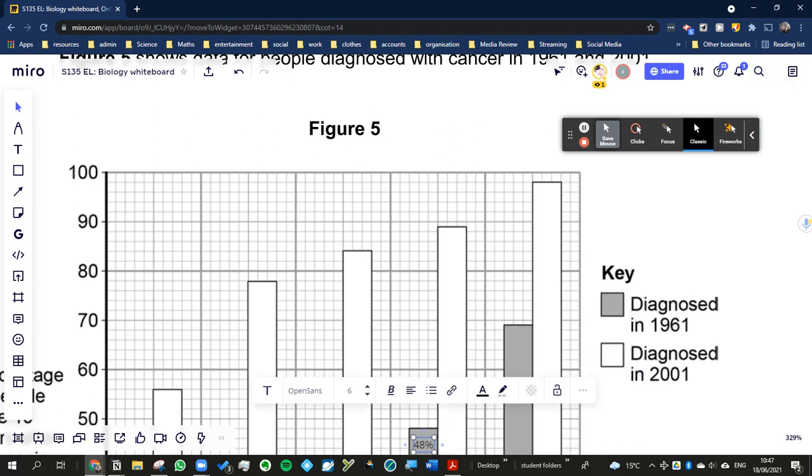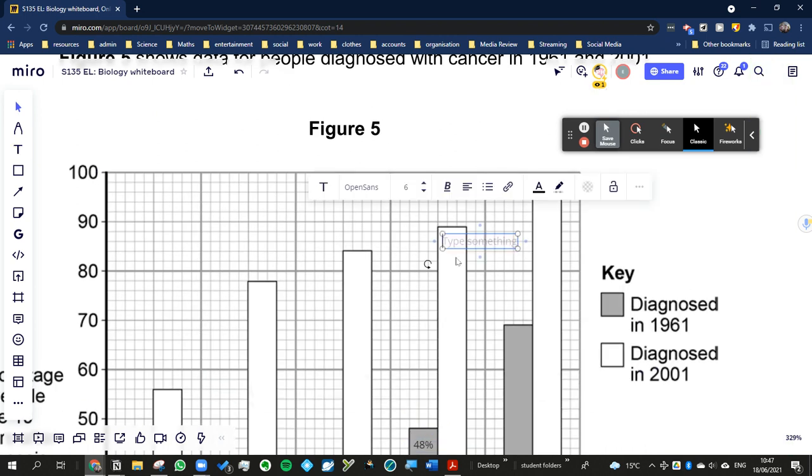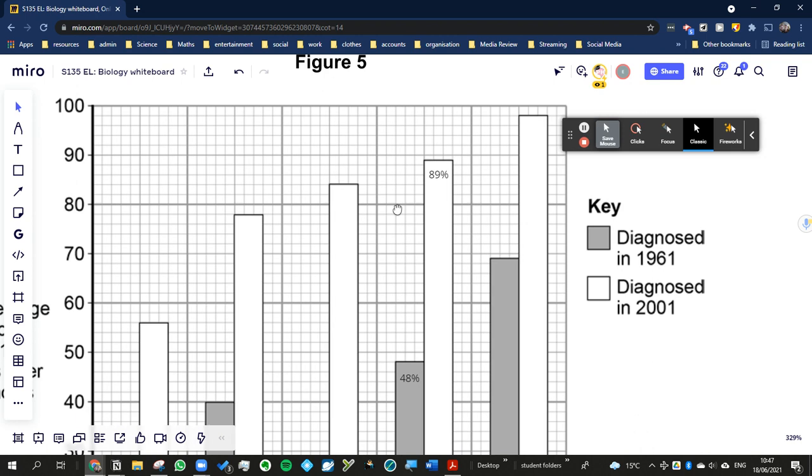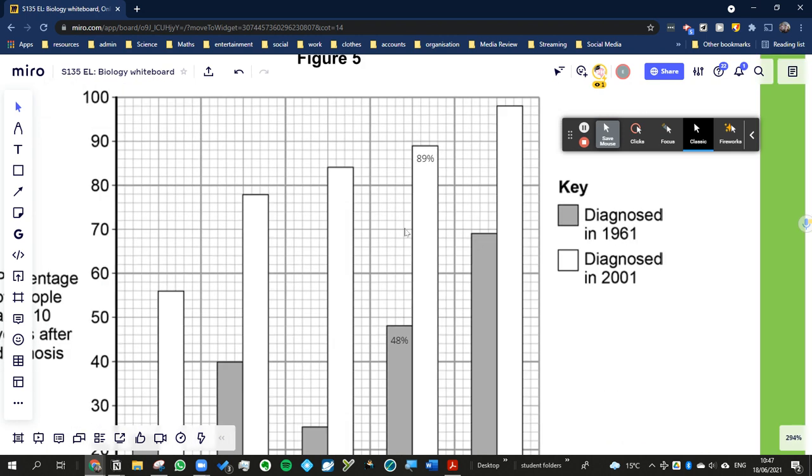So it's one division from 90, so it must be 89%. So the chance of you surviving skin cancer after 10 years, of being alive after 10 years of being diagnosed with skin cancer in 2001 was 89%.